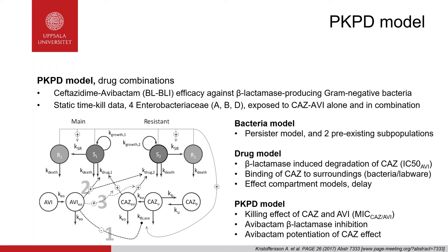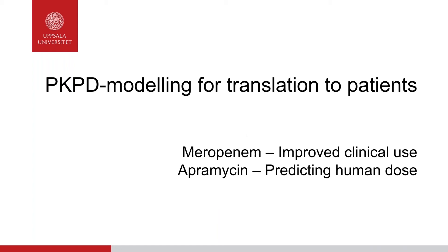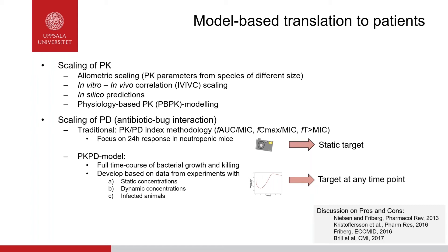Even though we strive to develop as simple models as possible, the models often need to be quite complex to describe the time-kill data. The purpose of our PKPD models is to apply them for translation from pre-clinical study data to humans, with the ultimate goal of proposing suitable dosing regimens in patients. The first example will be on meropenem — how we can use PKPD models to explore suitable dosing regimens in different patient groups — and the second will be on apramycin, illustrating how PKPD models can be applied to estimate a human dose during pre-clinical drug development.